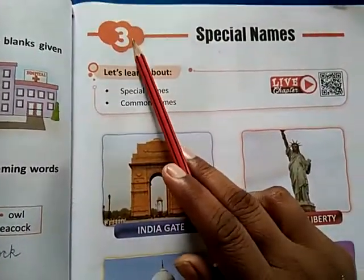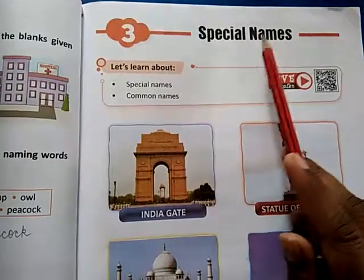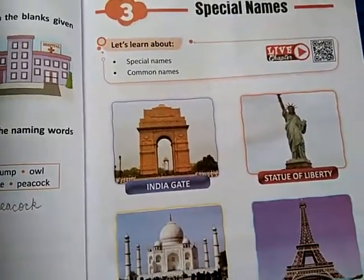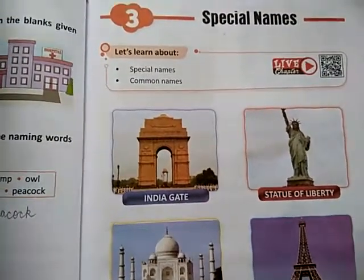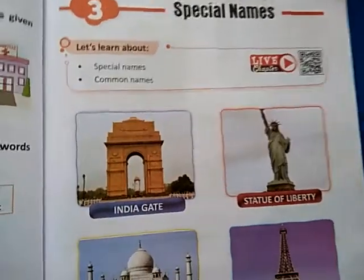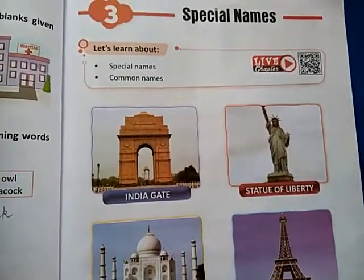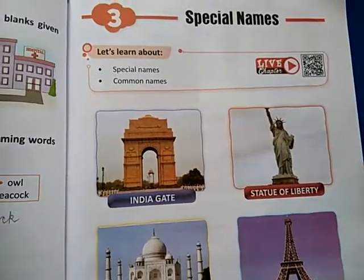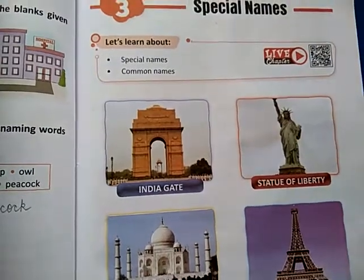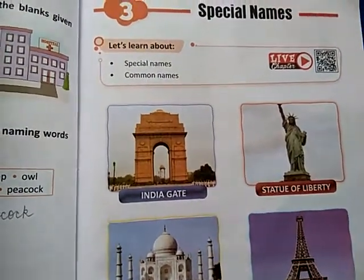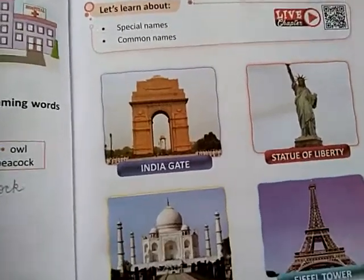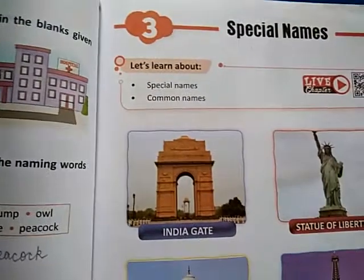See beta, it is chapter 3. Chapter name is Special Names. In second chapter we have learnt about naming words — naming words ke bare mein humne second chapter mein discuss kiya tha. I hope you have cleared this thing that naming words are noun and noun means name. We can say nouns are naming words. Hum keh sakte hain ki noun jo hota hai wo naming words hote hain.